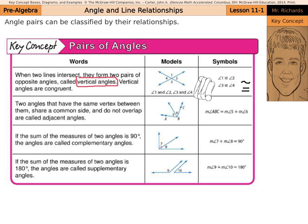Two angles that have the same vertex, share a common side, and do not overlap are called adjacent angles. Here you can see the measure of angle ABC with B being the vertex. So A to B to C, and the measure of angle ABC is equal to the measure of angle 5 plus the measure of angle 6.